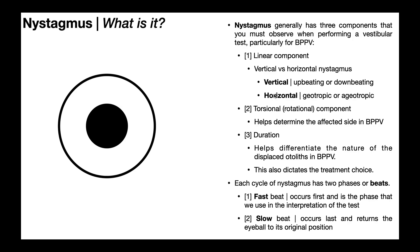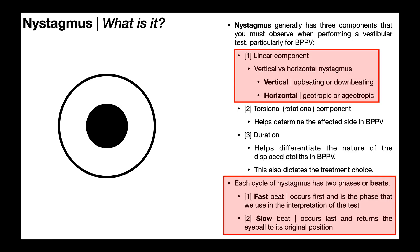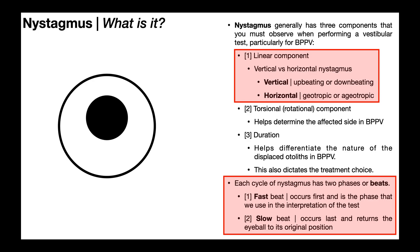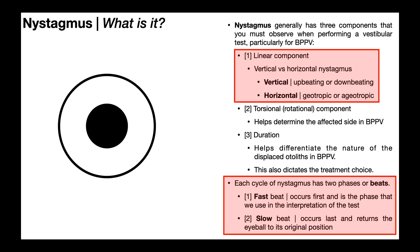The linear component of nystagmus can either be vertical or horizontal. What you see here is obviously vertical because it's beating up and down. If it were horizontal, it would be beating left and right.